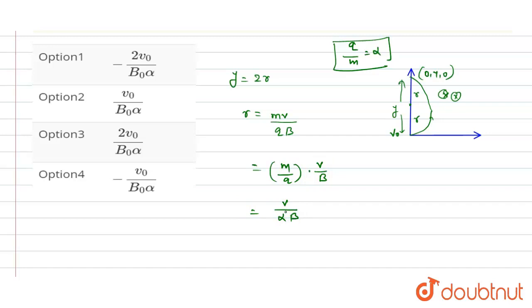And we know that the value of y equals 2r. So this is equal to 2 multiplied by the value of r, which is v divided by alpha into B. Therefore, the value of y is equal to...